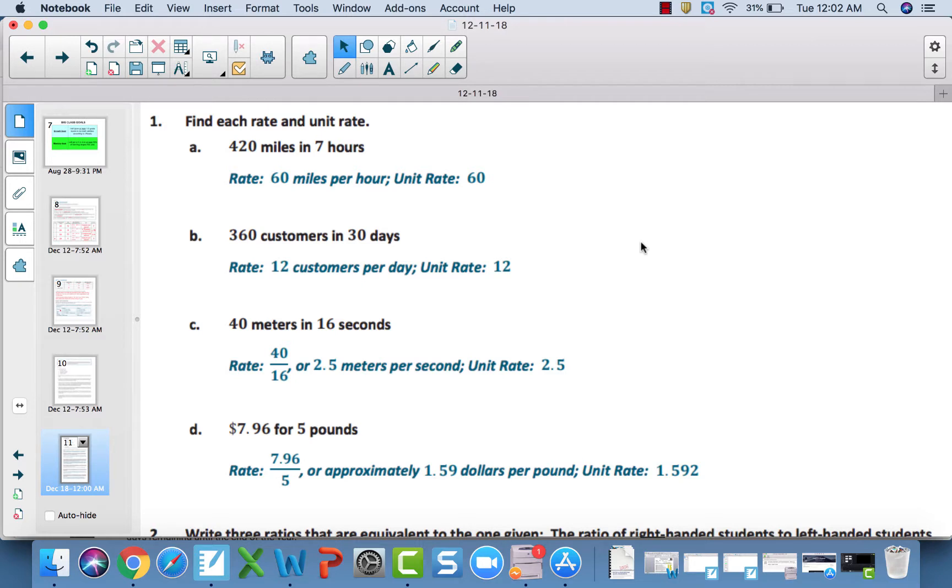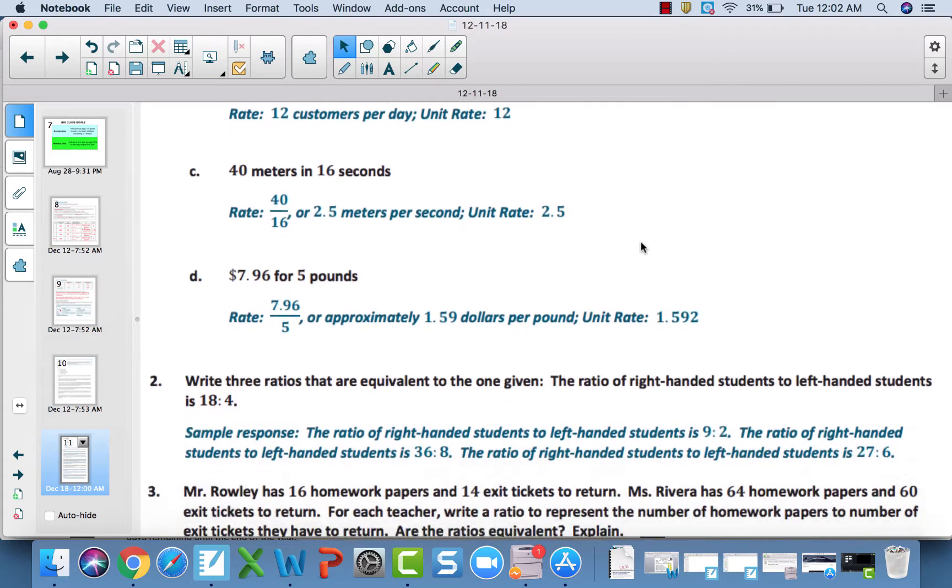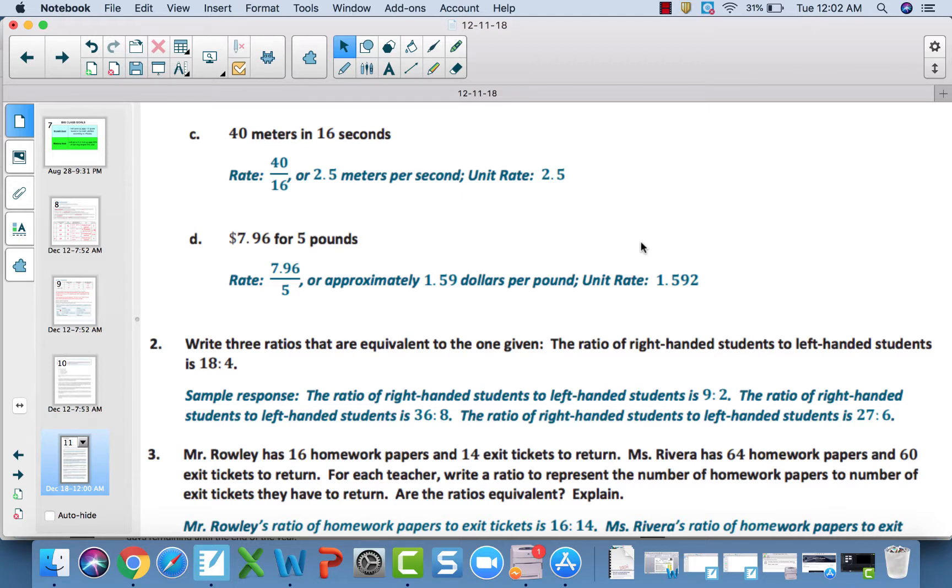For 1A here, the rate is 60 miles per hour, making the unit rate 60. Remember, the unit rate is the amount per one. You can find that by dividing miles and hours to get speed in miles per hour. For B, you should have got 12 customers per day. 360 divided by 30 is 12, and your unit rate is 12. C is where our unit rate starts being a decimal. 40 divided by 16 is 2.5. So you have 2.5 meters per second, making your unit rate 2.5. For D, you should get approximately $1.59 per pound. The unit rate as a whole is 1.592, but in context, because we're talking about money, you're looking at $1.59 per pound.